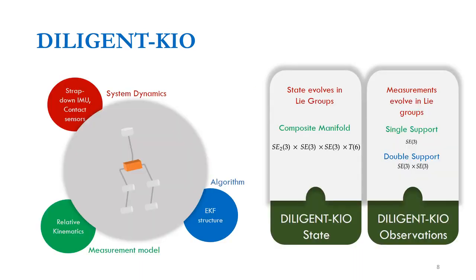While we maintain the same prediction and measurement models as the flat-foot filter, the main difference lies in the modeling choice. We consider that both the state and observations evolve over distinct matrix Lie groups. The state evolves over a composite manifold constructed through a direct product of different sub-manifolds, while measurements evolve over the Lie group SE(3) during single support and a direct product of two SE(3) objects for double support. This modeling choice leads to the use of a discrete Lie group extended Kalman filter — an EKF algorithm generalized to work across matrix Lie groups.